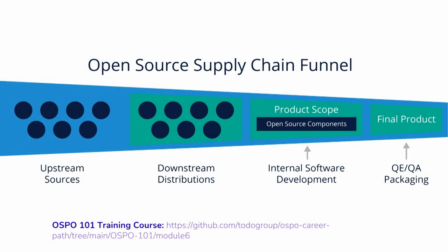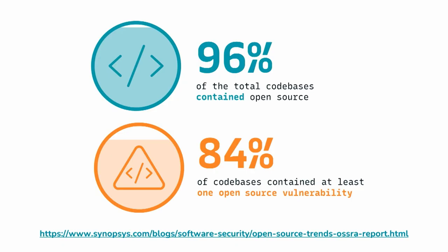We discussed how to start this, and we agreed that the best way—before addressing OSPO—is giving a wide overview on the value of open source nowadays. Open source is everywhere. You might be using software that is proprietary, but in the background there are already open source components. According to the latest research from Synopsys—who have been doing this study for the past four or five years—we found this year that 96% of code bases contain open source.